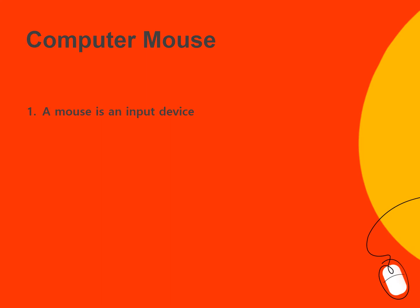The mouse helps you to pick items, for example icons and menus on the computer screen. If you want to pick any icon, file, or menu, you use the mouse.